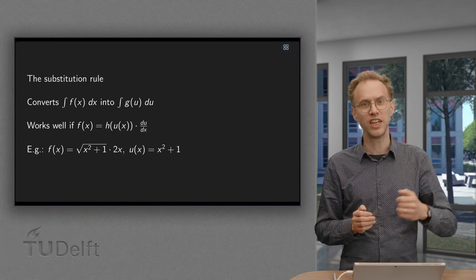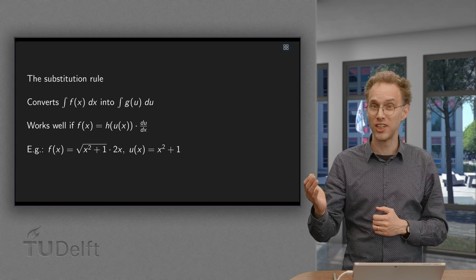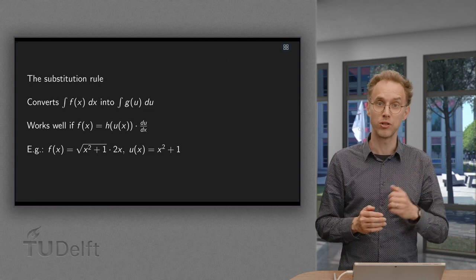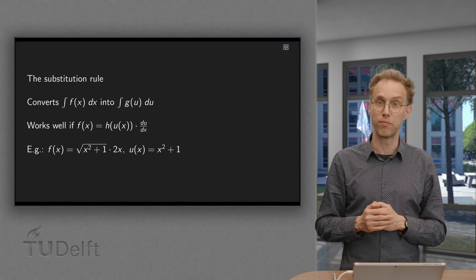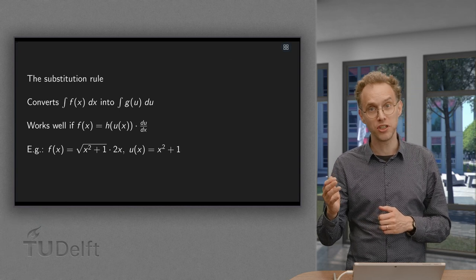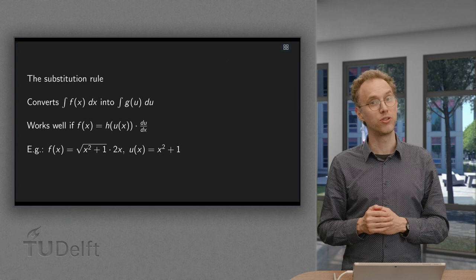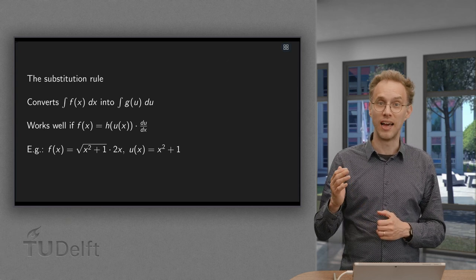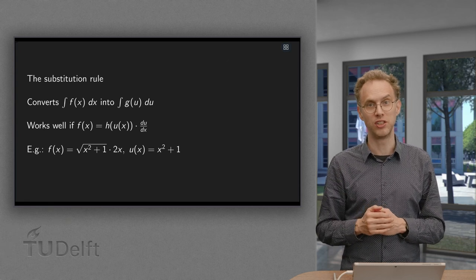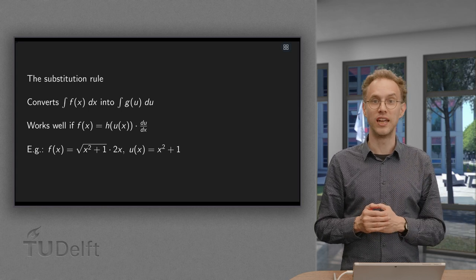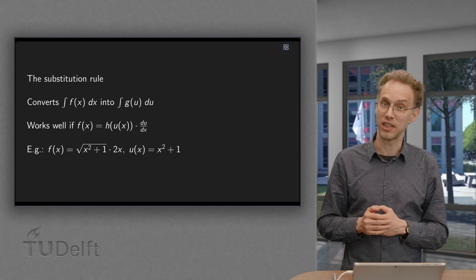Well, for differentiation we have the product rule and the chain rule. This allows us to compute the derivatives of products of functions and compositions of functions. For antiderivatives though, these rules do not exist. And this has some big implications. For many functions an antiderivative does not exist.